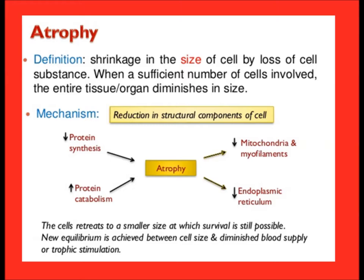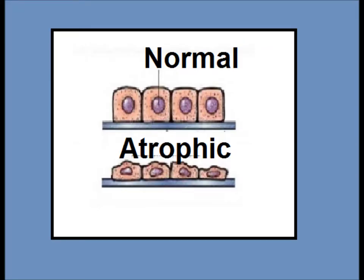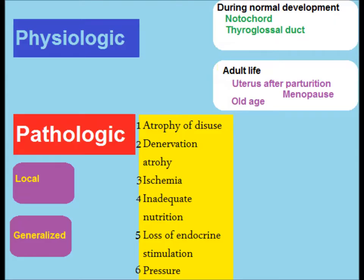Decrease in the cellular size leads to decrease in the organ. Atrophy can be divided into physiologic atrophy and pathologic atrophy. Physiologic can occur in embryonic life or in adult life, and pathologic may be local or generalized.